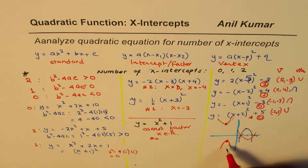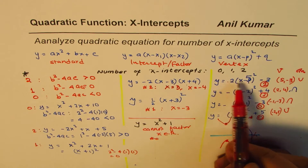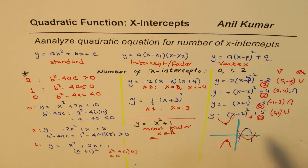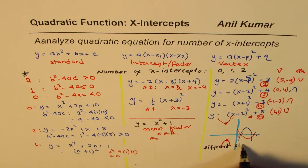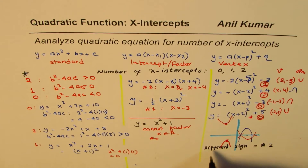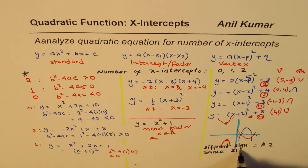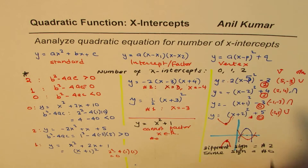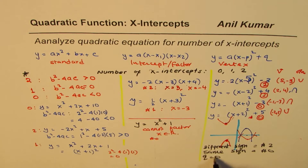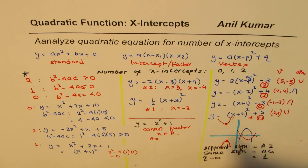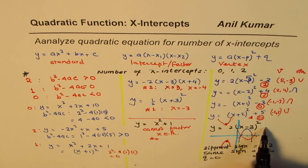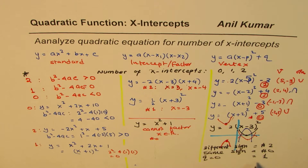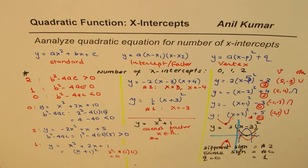A simple rule for vertex form a(x - p)² + q: if the signs of a and q are different (one positive, one negative), the number of x-intercepts is 2. If the signs are the same, the number is 0. And if q = 0, the number is 1 — the vertex sits on the x-axis.